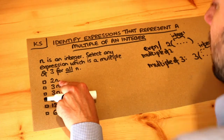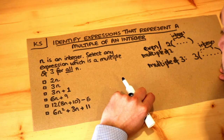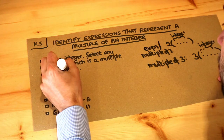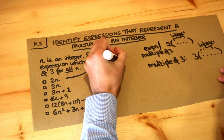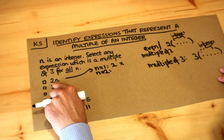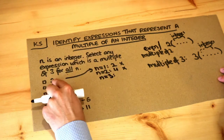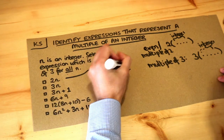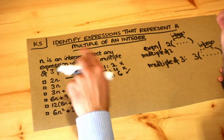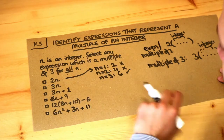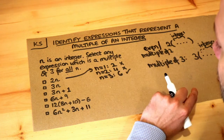So could 2n be written as three times something? Well no, there's no three we can factorize out. If n is one, two times one is two — not a multiple of three. If n is two, two times two is four — not a multiple of three. But if n is three, two times three is six, which is a multiple of three. So it basically depends. Because we can't factorize out a three, we can't guarantee it's a multiple of three for all n.